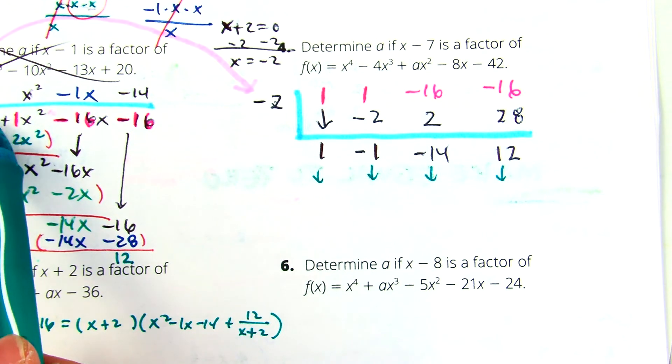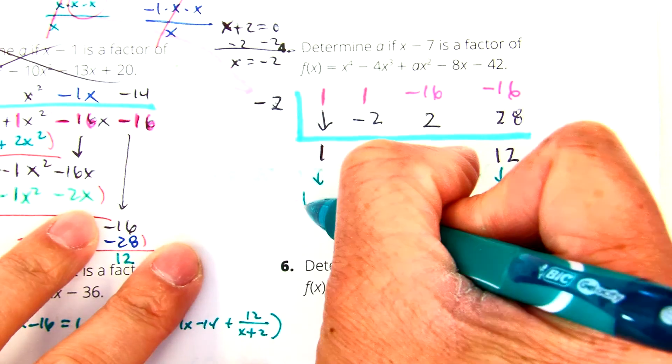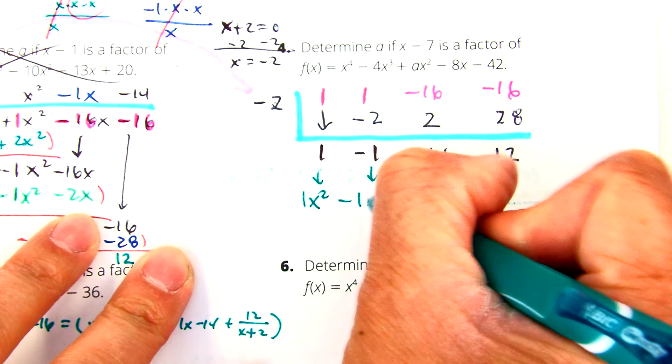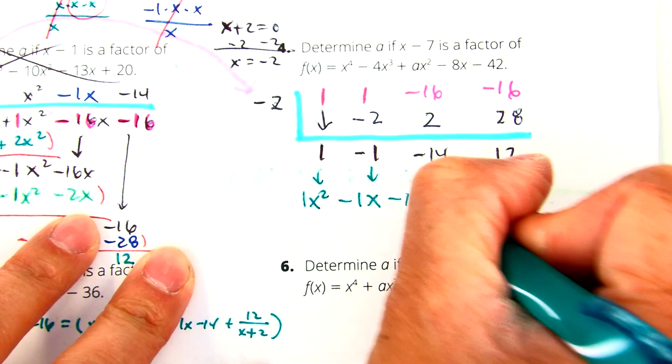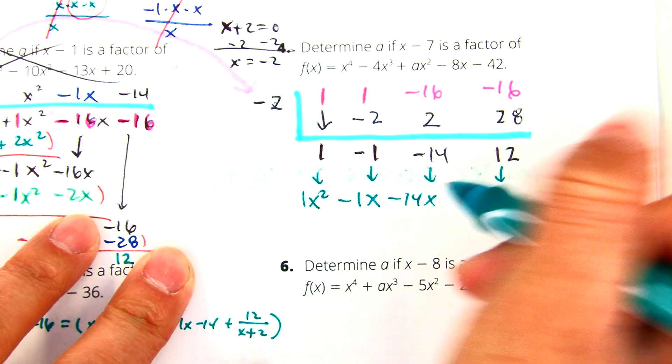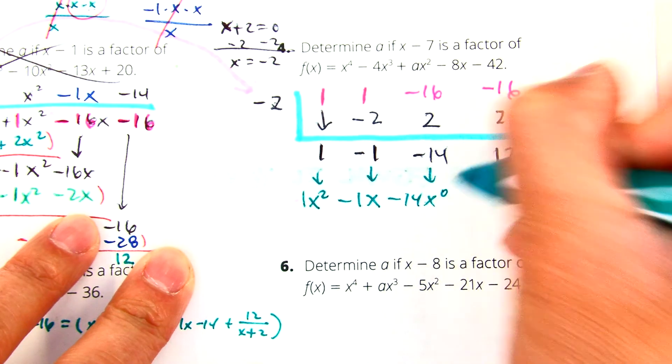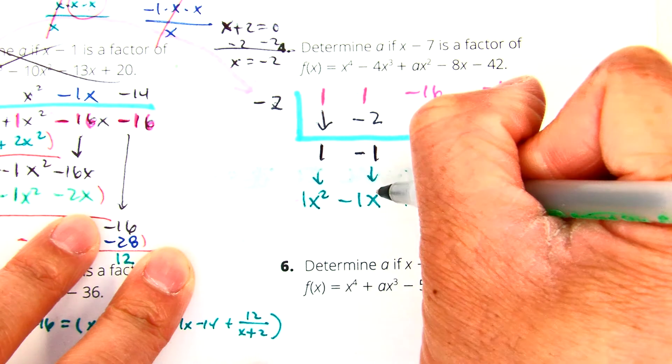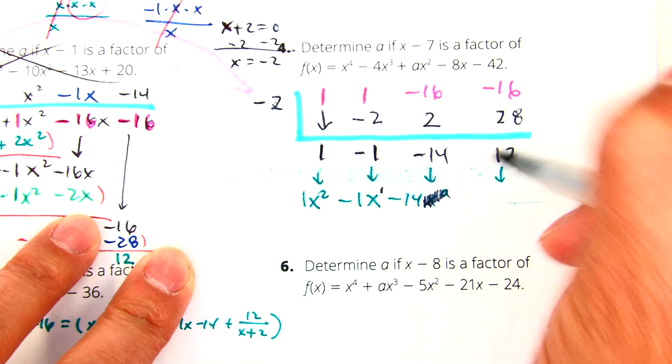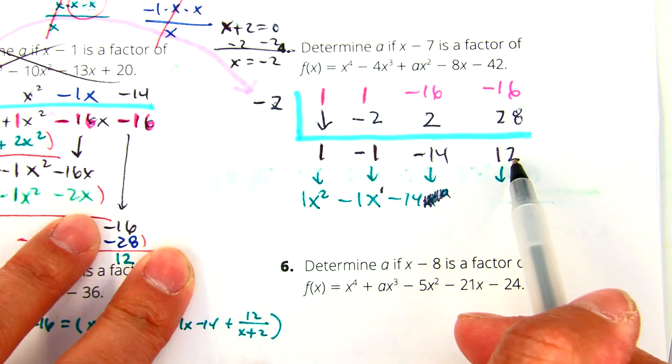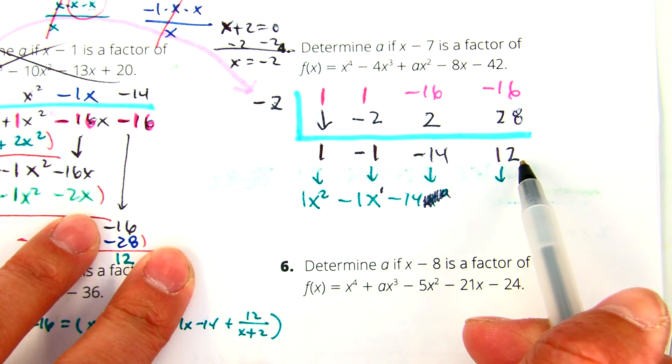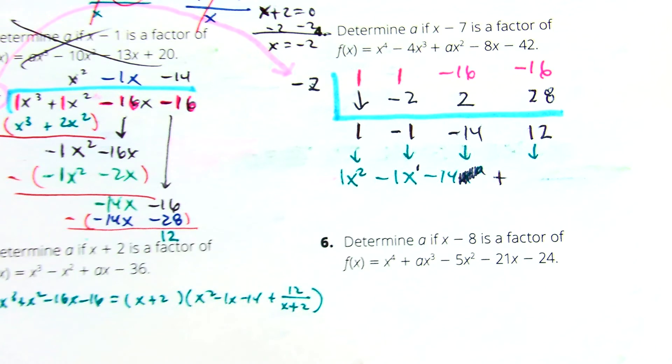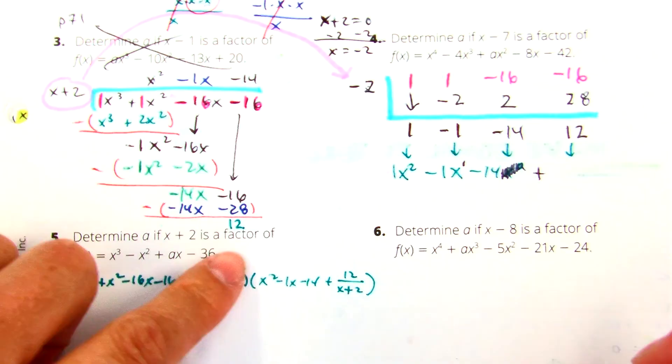What's one less than three? Two. So this becomes one x squared. And then you're just going to be descending, going down. So this is just going to be negative one x. This one's going to be negative 14x to the zero. If I write x to the zero, that's just what number? One. So we don't need to write x to the zero. Now, the 12, is it positive or negative? Positive. Now, do I just write plus 12? What do we do with the remainder over here? We put it over x plus two.